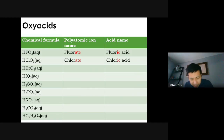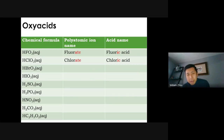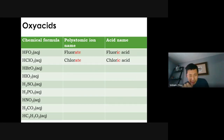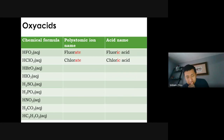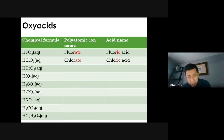It does get more complicated if you have oxygen, because you can have various numbers of oxygen atoms and that changes the name. With oxygen you're going to have polyatomic ions — and that's a big headache. Look at the first example: HFO3. FO3 is a polyatomic ion called fluorate. The name for that acid is fluoric acid. Next, ClO3 — instead of fluorine you have chlorine, still three oxygens. That polyatomic ion, ClO3 minus, is chlorate. The name of the acid is chloric acid.